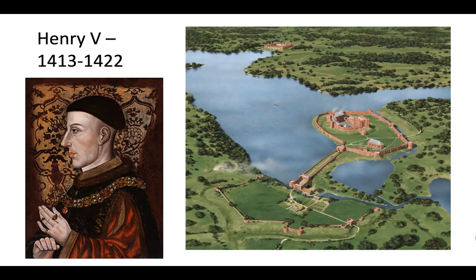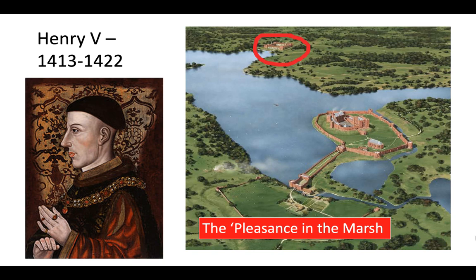Next we're going to look at Henry V, and there's just one building to focus on from this time: the Pleasance in the Marsh, built for Henry V. Its only purpose is for private entertainment — banquets, festivities, and relaxation, a retreat for the king. This building is like the definition of palatial. Interestingly, it was inspired by drawings, stories, and reports of garden palaces in Islamic Spain, whose style had become popular in Northern Europe — telling us about the fashion and spread of ideas at this time. Unfortunately the Pleasance was abandoned about a hundred years later in the time of Henry VIII, and now only earthworks remain.